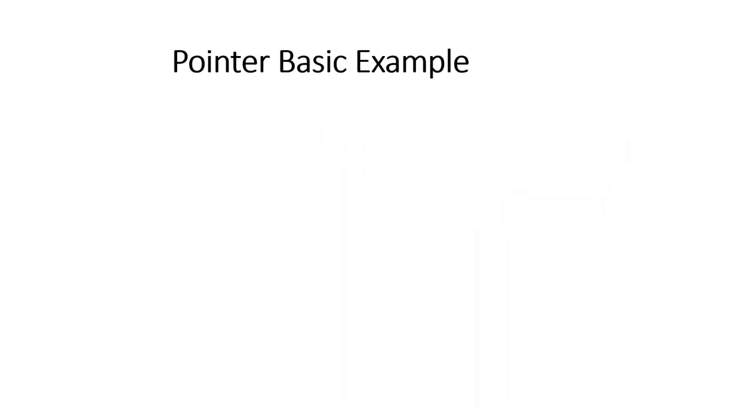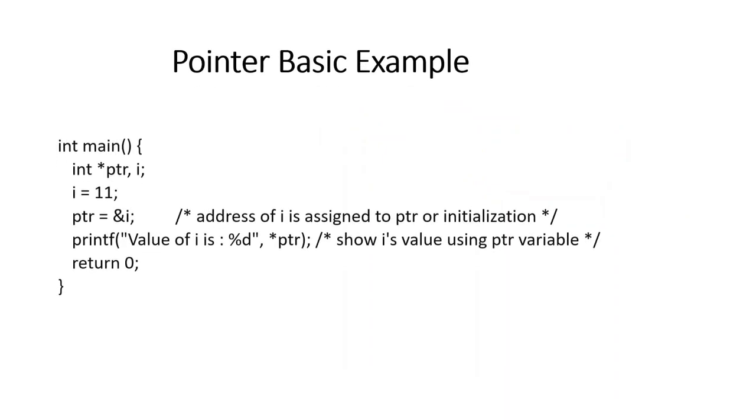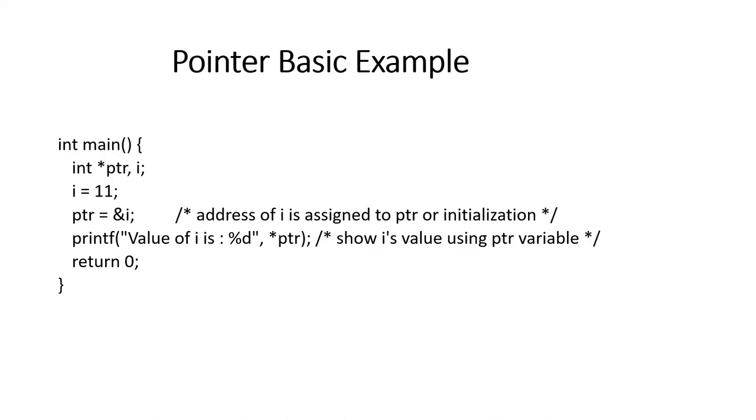Pointer basic examples. Here is an example of how we can access value of i using pointer variable like ptr. The value of i is 11. ptr represents the address of i, and we get the value of i using *ptr.